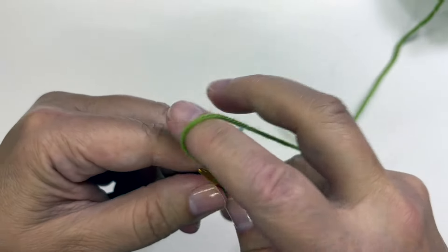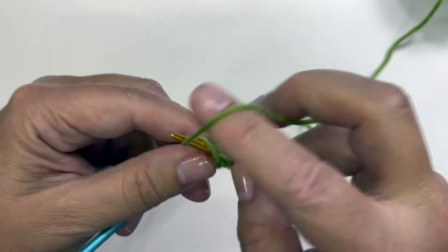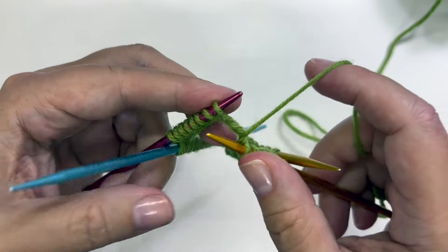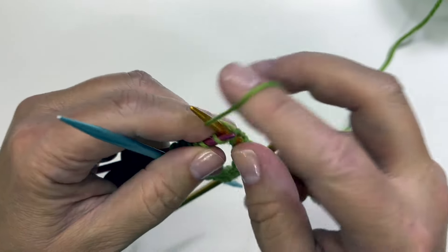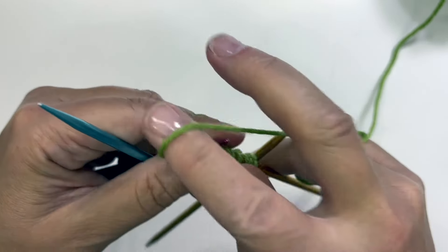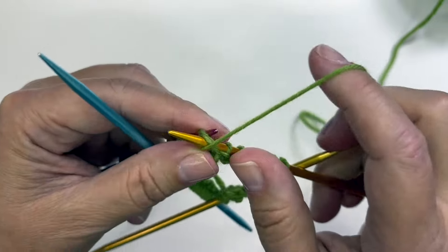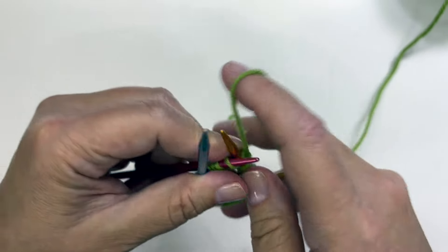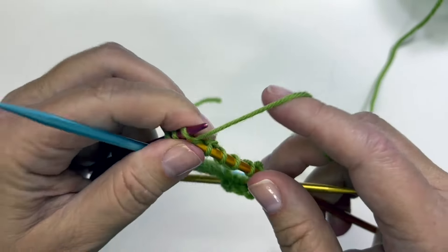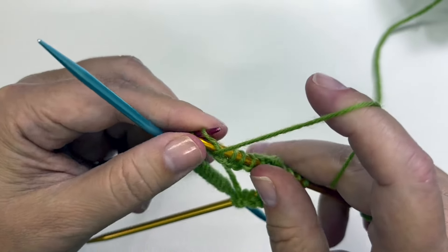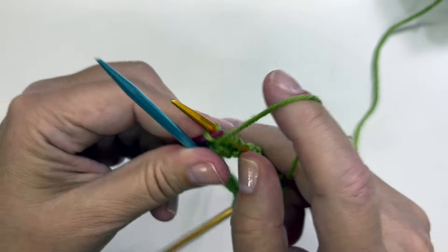I've got one more little piece of advice for you. If you're working across the first round and you find that you do have a twist in your needles, you can still fix it.